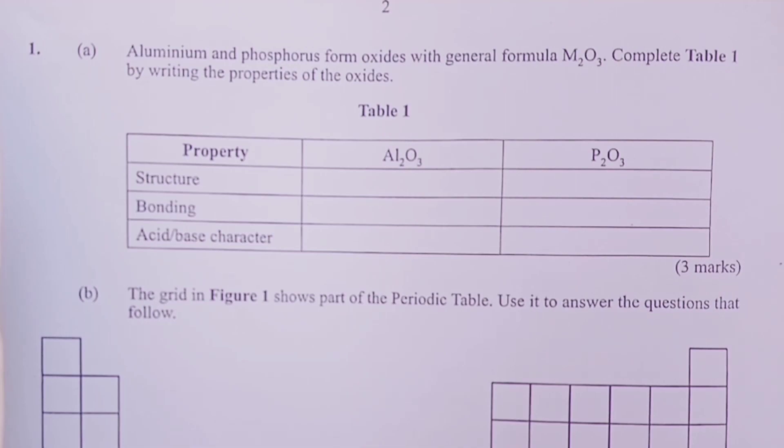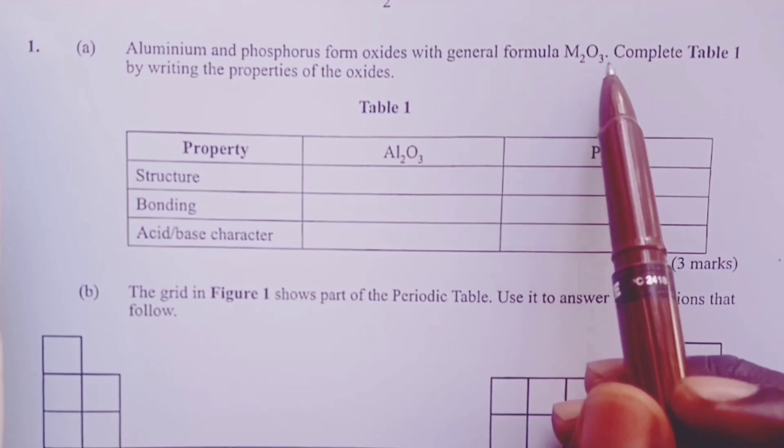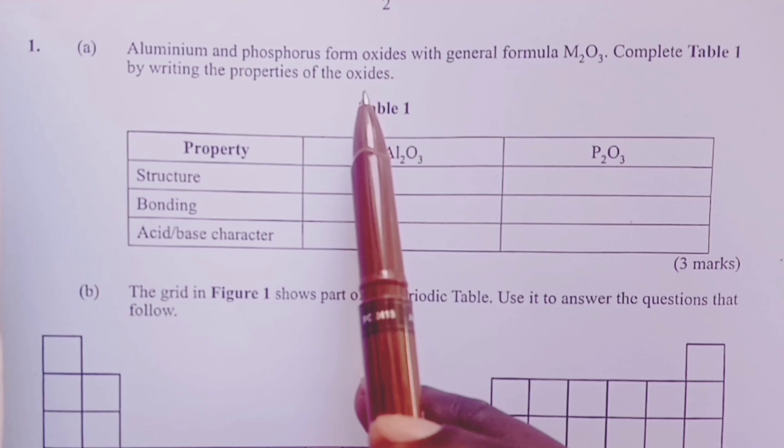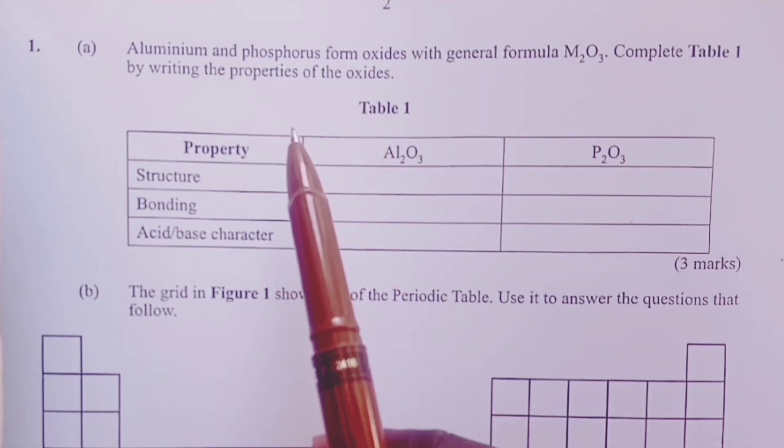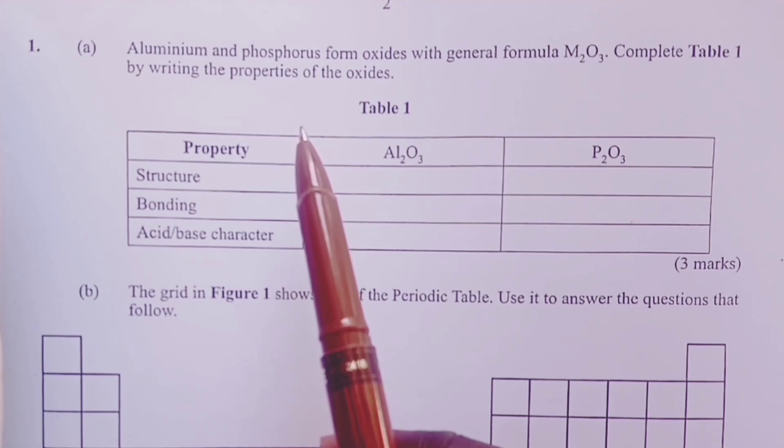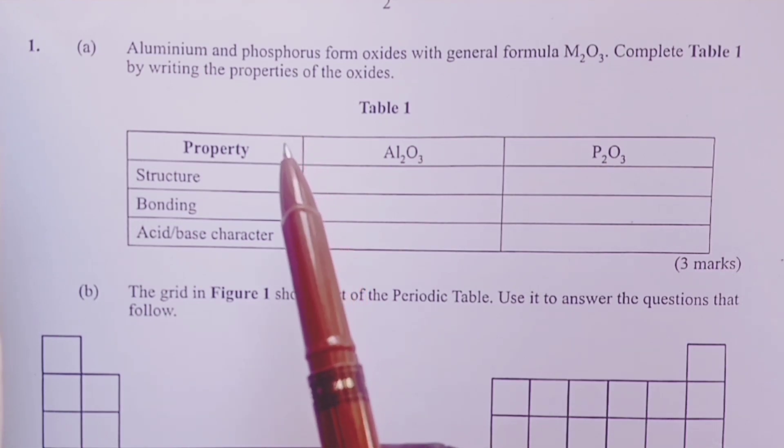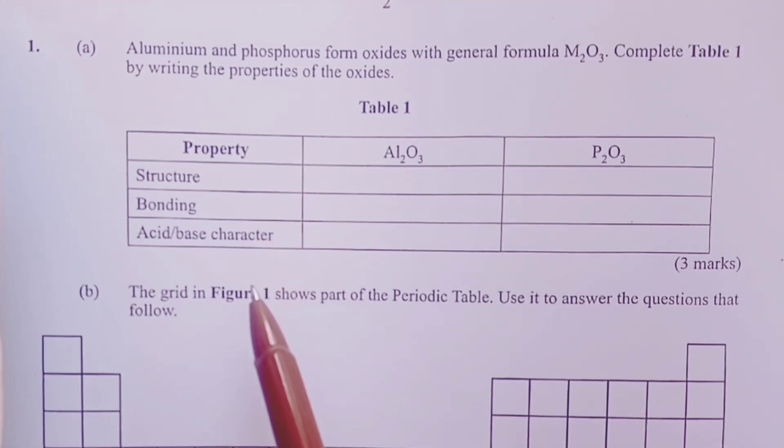Question 1, part A. Aluminum and phosphorus form oxides with general formula M2O3. We are asked to complete table 1 by writing the properties of the oxides. Question 1 part A tested the understanding of period 3 elements. In class, we usually look at properties and trends across period 3. In this content, we usually consider the oxides and chlorides of the elements in period 3. This time around, we've been asked about the oxides, and it is about aluminum and phosphorus in particular.